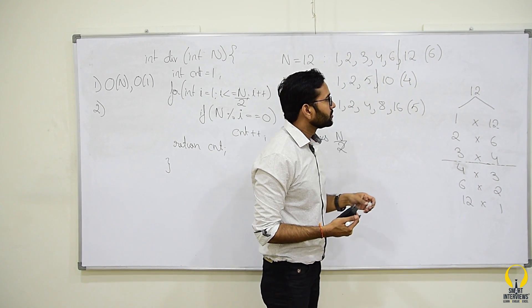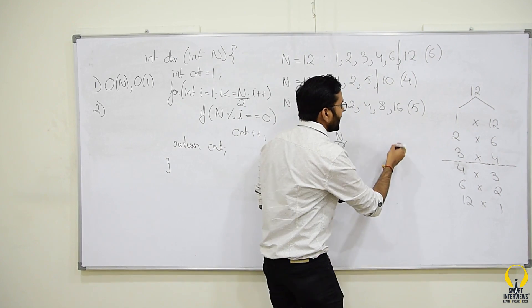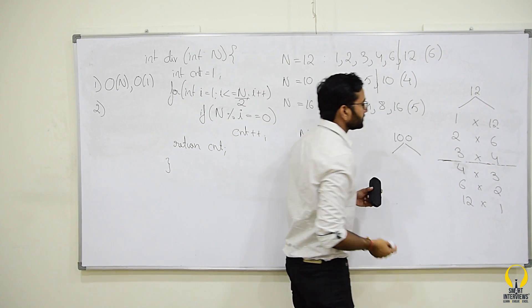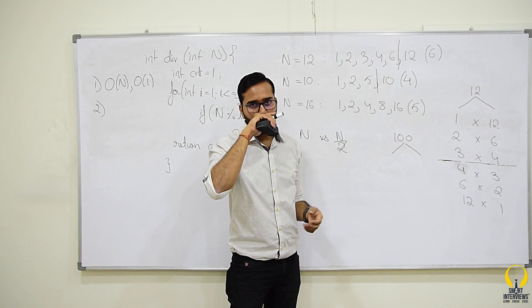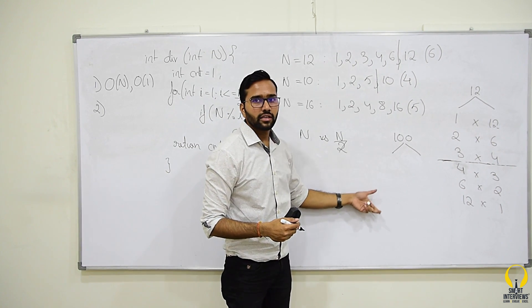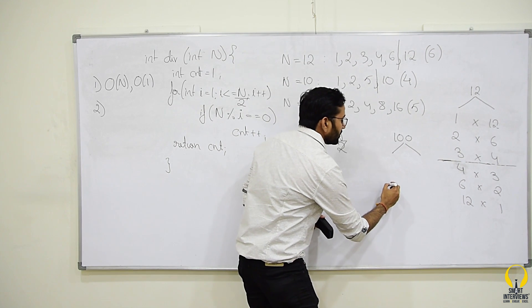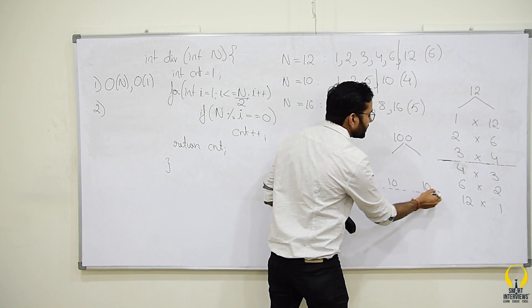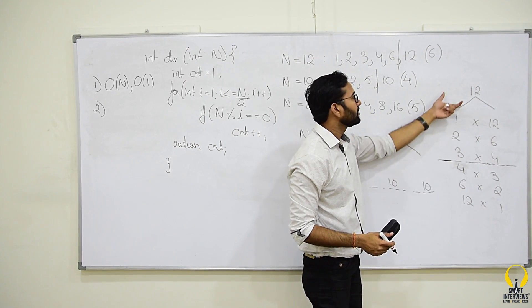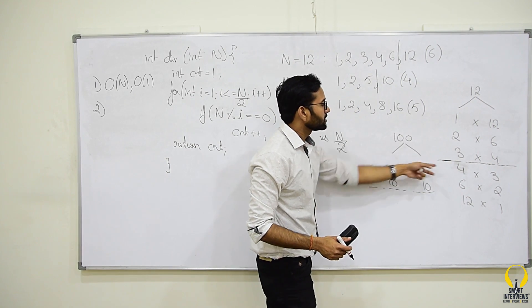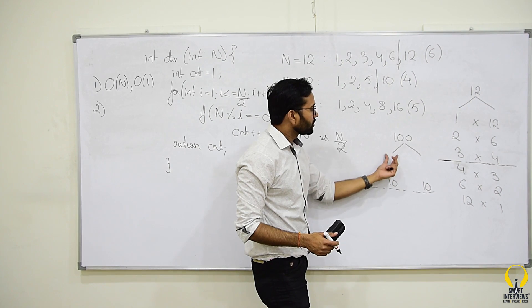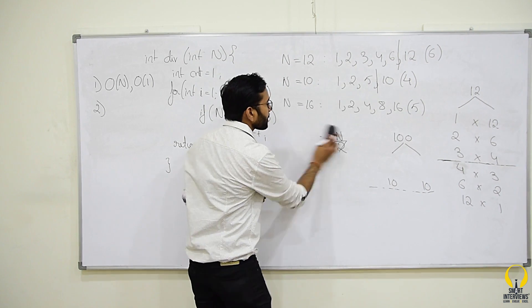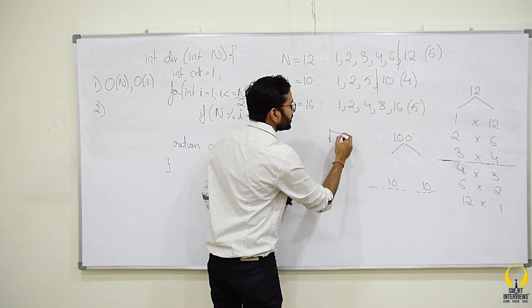Similarly, I would ask you to draw the same breakdown for n equal to 100 and figure out till which limit should we go. So, try to do this exercise. After that, you must have observed that when you multiply 10 with 10, you get 100 and beyond that all the divisors are repeated. So, from this, you can observe that we should not go beyond 10, we should not go beyond 3. 10 here or 3 here is nothing but square root of n.